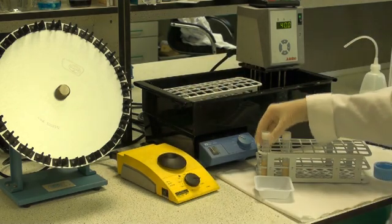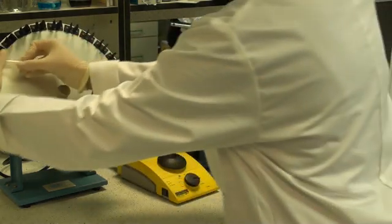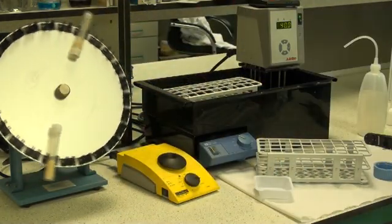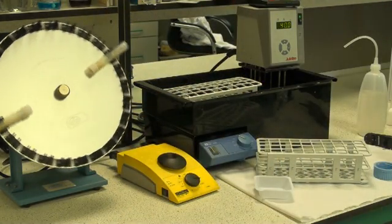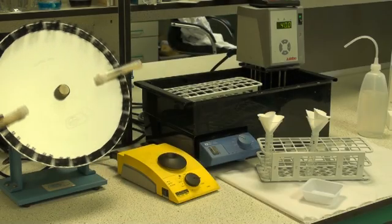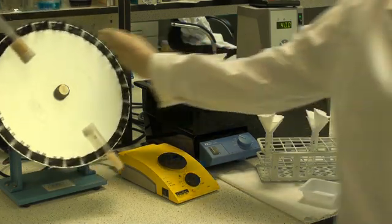Alternatively, the tubes can be placed in the Stuart blood tube rotator and allowed to rotate over the 1 hour period. After 1 hour, turn off the rotator and remove the tubes.